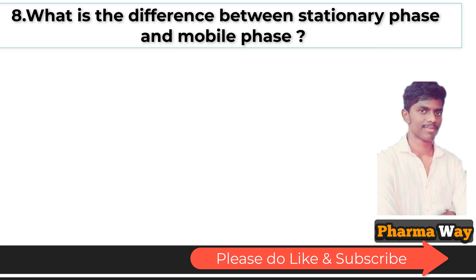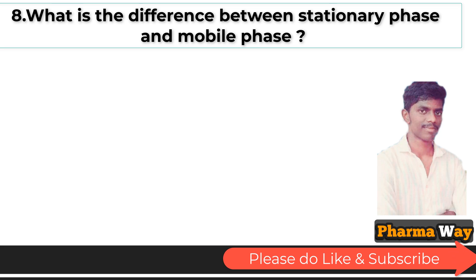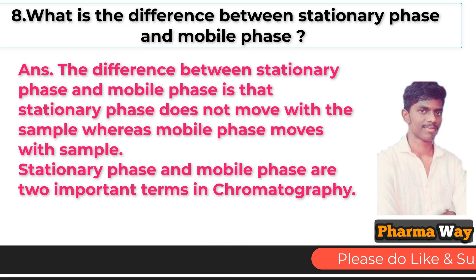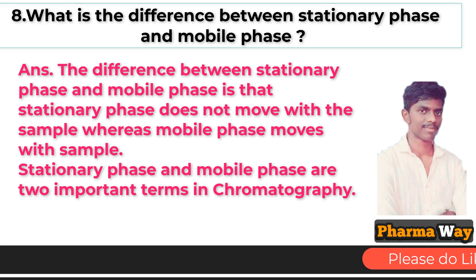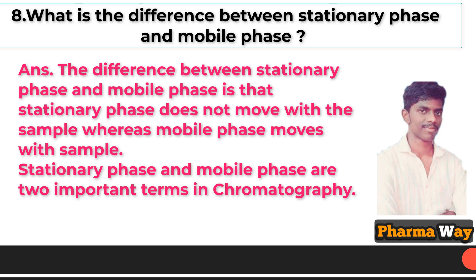What is the difference between stationary phase and mobile phase? Answer: The stationary phase does not move with the sample, whereas the mobile phase moves with the sample. Stationary phase and mobile phase are two important terms in chromatography.